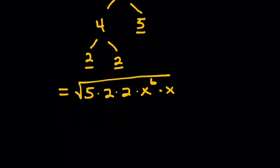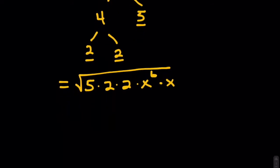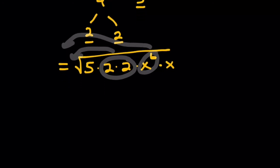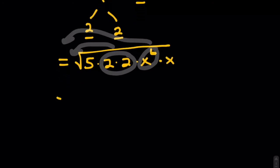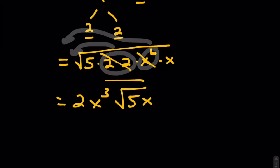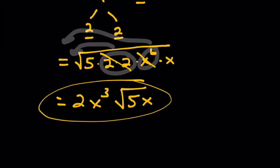Notice a theme with these variable terms. We have a pair of twos — put that on the outside. And since we have an even power of x, we can take the square root of that as well. We rewrite this as two — crossing off that pair — times x to the third, because six divided by two is three. Cross that off. What's left in the radical? Five and x. Our final answer is two x cubed times the square root of five x.